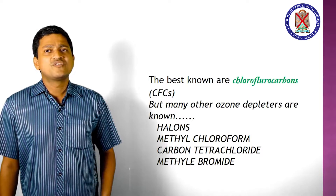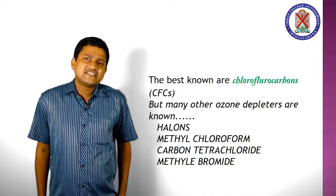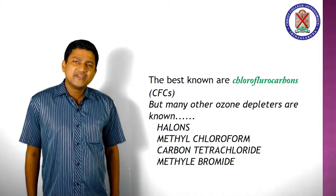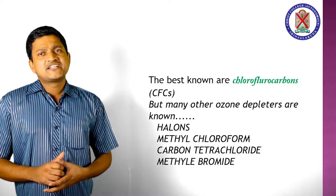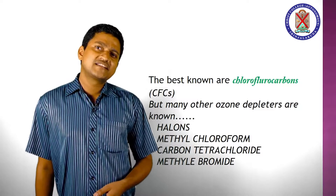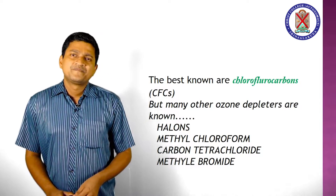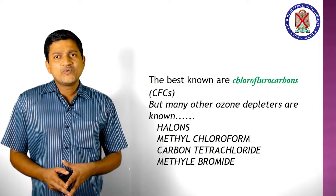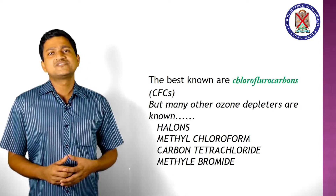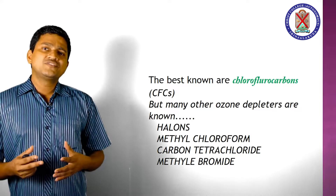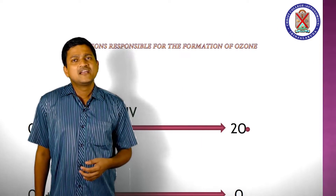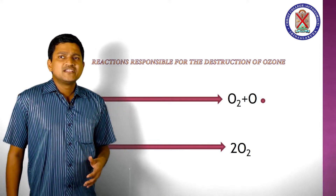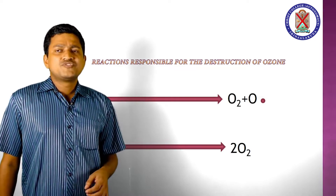The best known ozone depleters are chlorofluorocarbons (CFCs), halons, methyl chloroform, carbon tetrachloride, methyl bromide, etc. In the ozone chemistry, UV radiation splits O2 to form 2O atoms. The atomic oxygen reacts with O2 to form O3. Then O3 reacts with O to form 2O2. Under normal equilibrium, the rate of ozone destruction equals the rate of formation, so the concentration of ozone is fairly constant in the stratosphere.